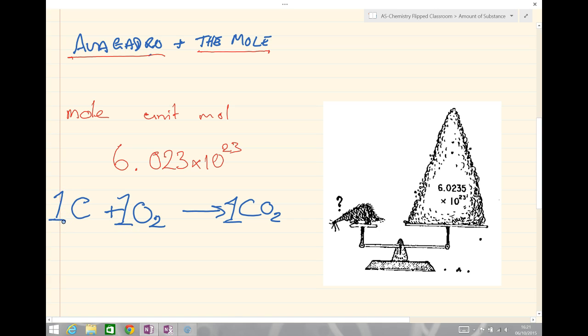In other words, if I had 6.023 times 10 to the 23 atoms of carbon, they would react with 6.023 times 10 to the 23 molecules of oxygen and make or produce 6.023 times 10 to the 23 molecules of carbon dioxide.